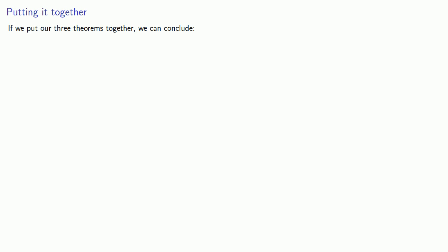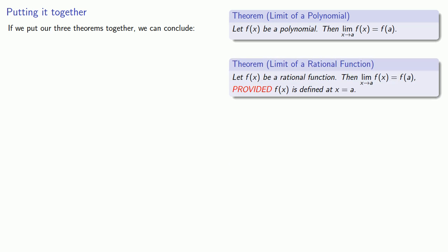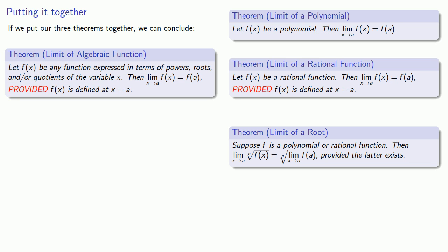Putting these things together, we can find the limit of a polynomial by evaluating it at the limiting point, the limit of a rational function by evaluating it at the limiting point, and the limit of a root function by evaluating it at the limiting point. Any function formed by taking a polynomial and forming a quotient or a root of that polynomial is called an algebraic function. These theorems together say that if I have an algebraic function — one expressible in terms of powers, roots, and or quotients of x — then the limit is just the function value, provided the function is defined at that point.